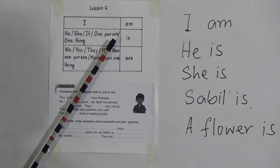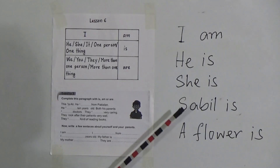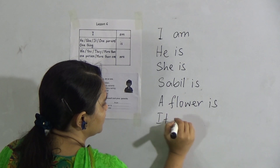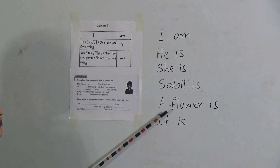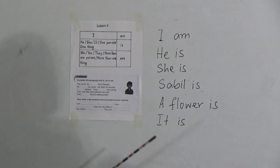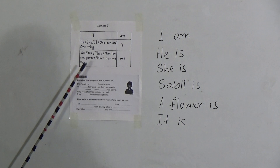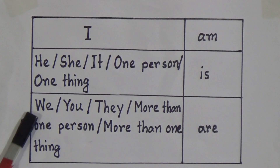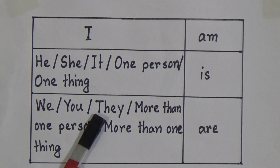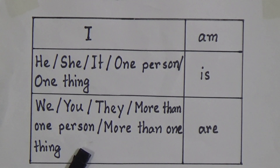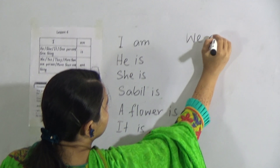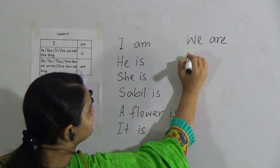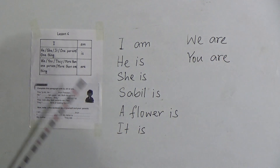So to review: he is, she is, it is, Sabin is — when talking about one person — and one thing like a flower, it will be 'is'. Now we will learn when to use 'are'. We use 'are' after plural subjects: we are, you are, they are — more than one person or more than one thing. So after 'we', it will be: we are. After 'you': you are.